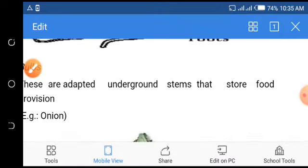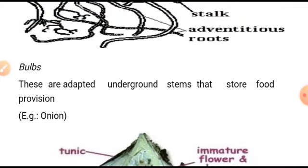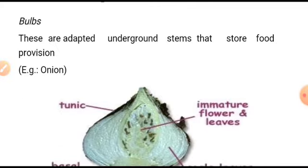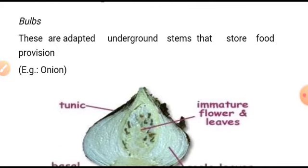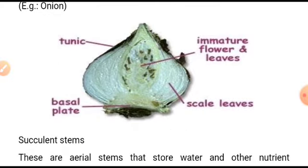There are what you call bulbs. These are adapted underground stems that store food. For instance, in the onion — if you say the special stem called a bulb, just think about onions. This is one good example of a bulb. They have scale leaves and a basal plate, with immature flowers and leaves found inside the bulb.